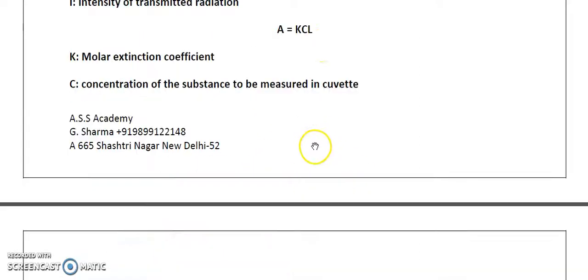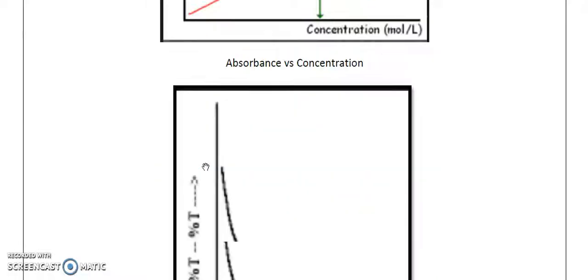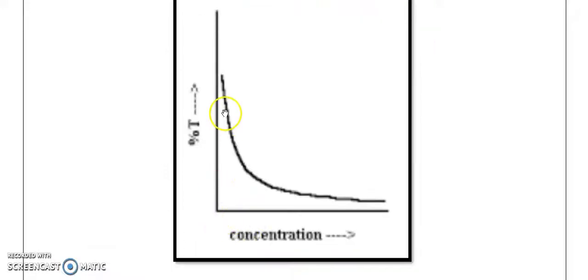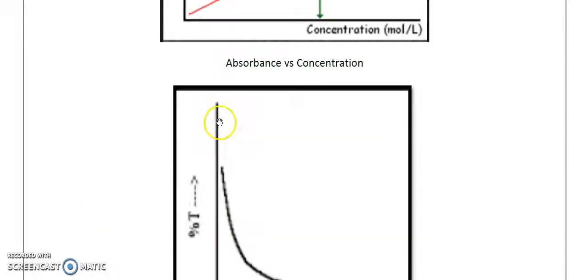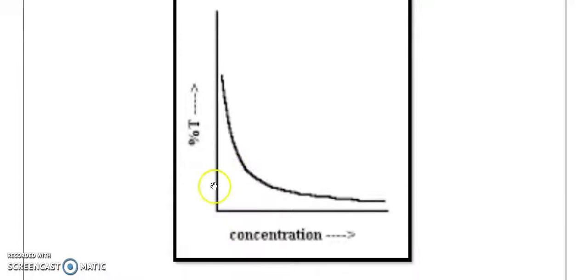If we observe a graph between absorbance and concentration, we can see a straight line between both of them, meaning absorbance is directly proportional to concentration. Similarly, if we plot transmittance on the y-axis and concentration on the x-axis, we see a rectangular hyperbola, showing that transmittance and concentration are inversely related.